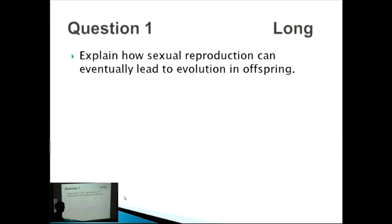So we're doing question 5.4 right now. These are tricky questions that students often struggle with. This question is: explain how sexual reproduction can eventually lead to evolution in offspring. There's actually two main parts of this which you want to make about 50-50 in terms of your proportions of your answer.